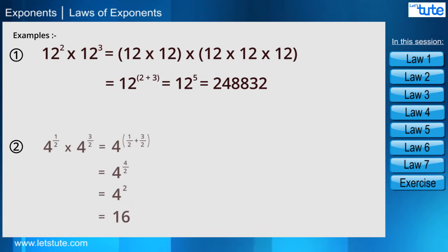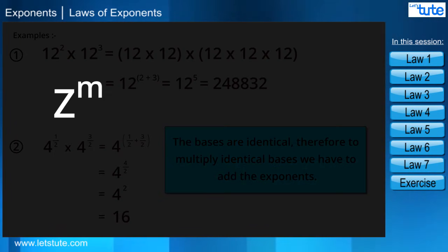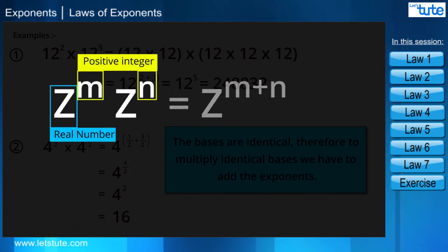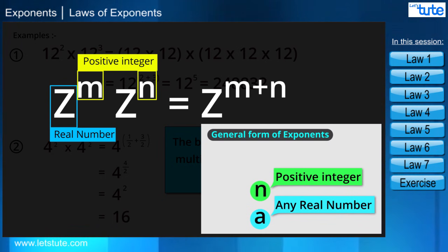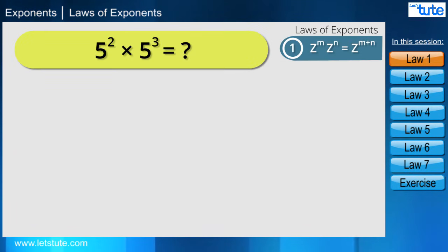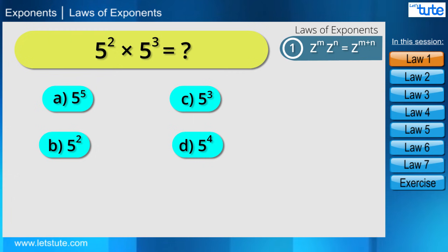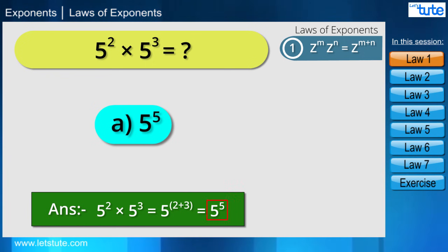Let's take a few more examples to confirm this is true in all situations. When the bases are identical, to multiply them we add the exponents. That is, z raised to the power m multiplied by z raised to the power n equals z raised to the power m plus n. This is our first law of exponents. For example, 5 raised to the power 2 multiplied by 5 raised to the power 3 equals 5 raised to the power 5.